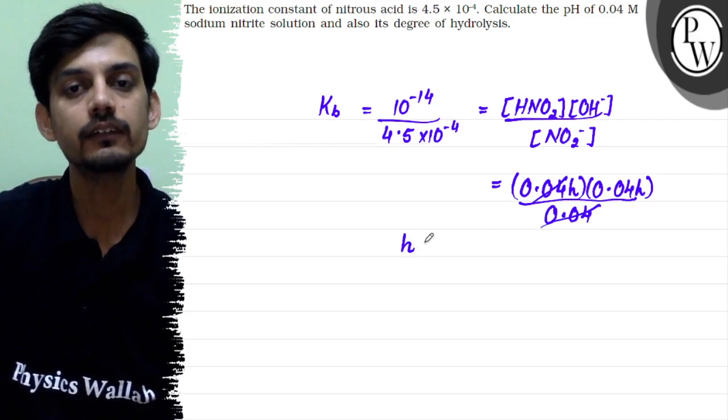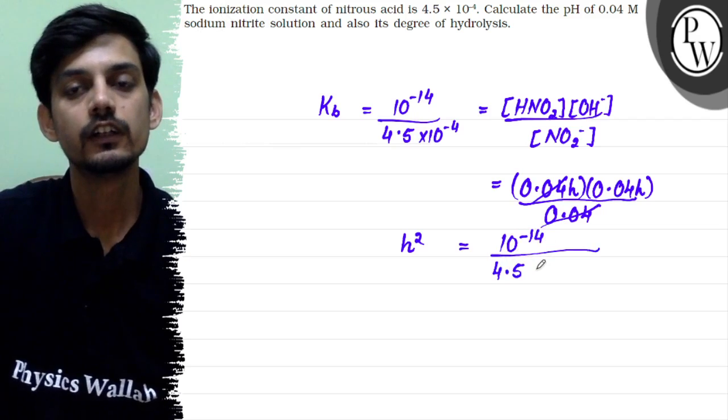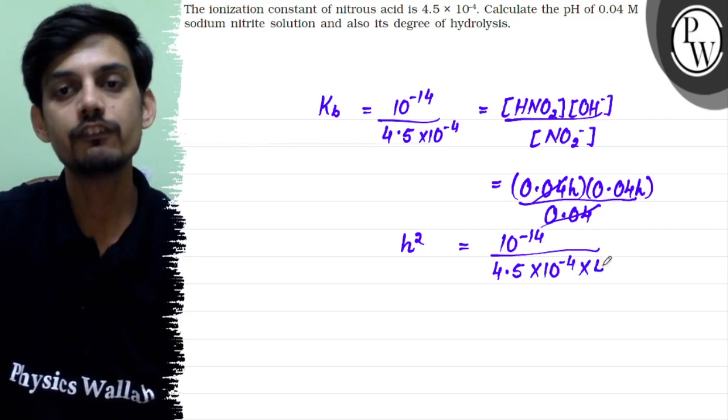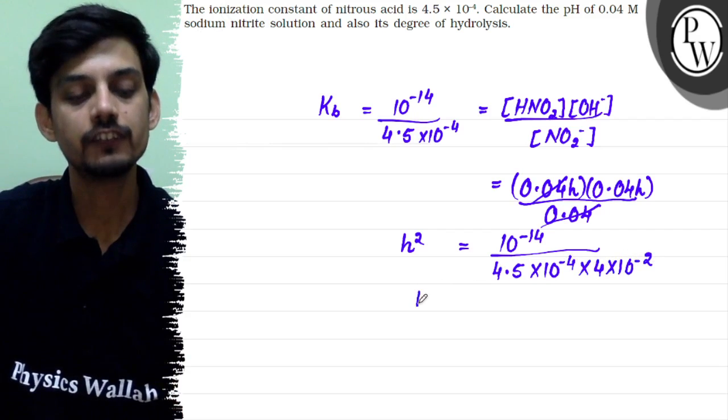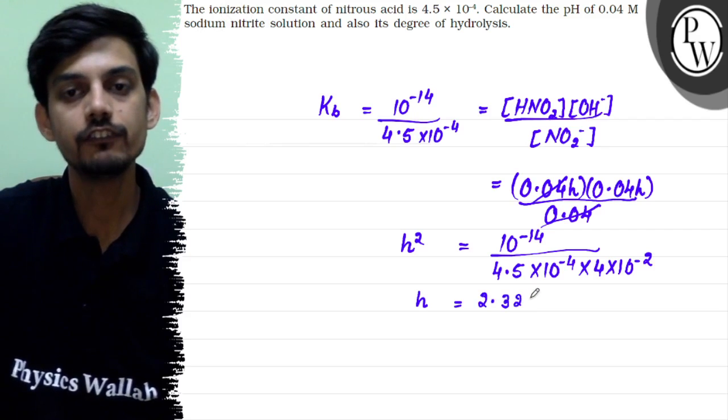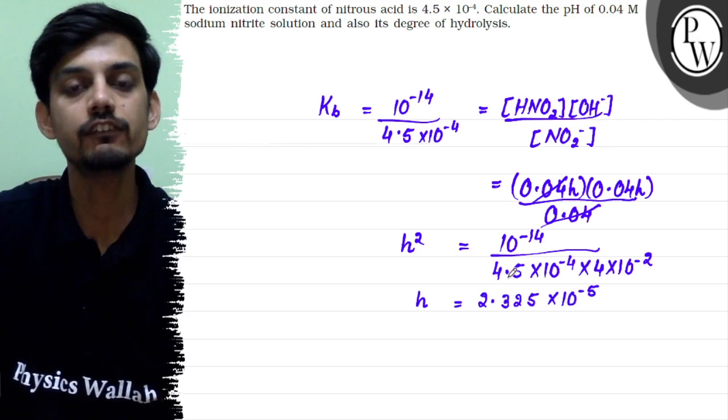Here H will get. First H² will get equals 10^-14 divided by 4.5 × 10^-4 multiplied by 4 × 10^-2. So on solving we will get H is equal to 2.325 × 10^-5.